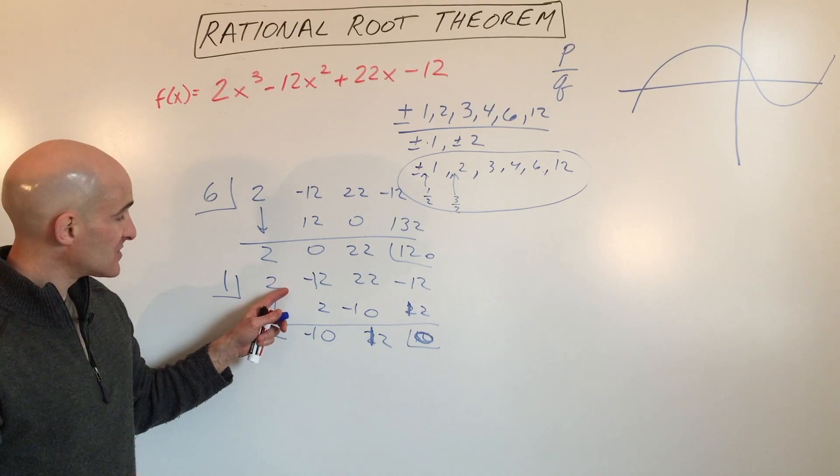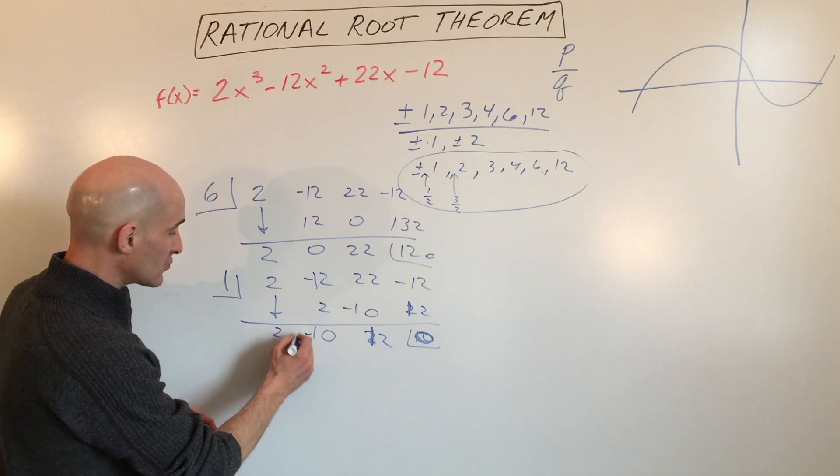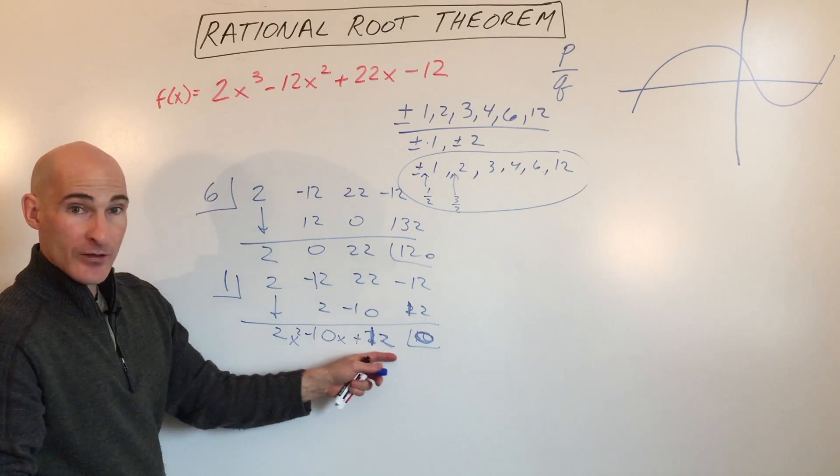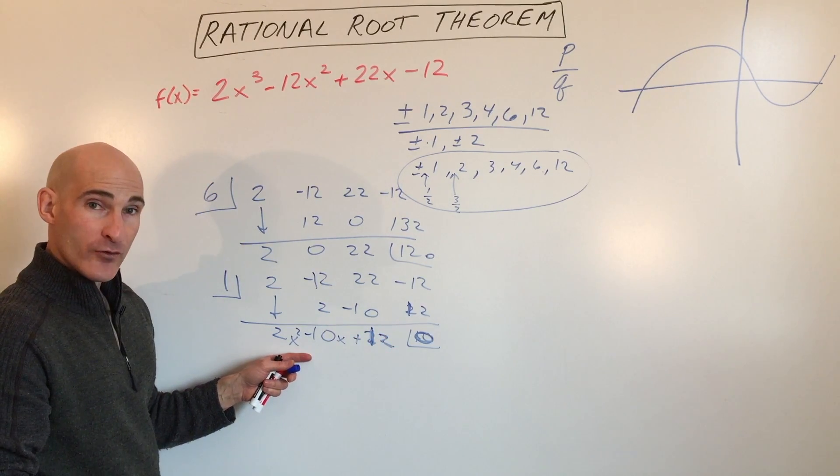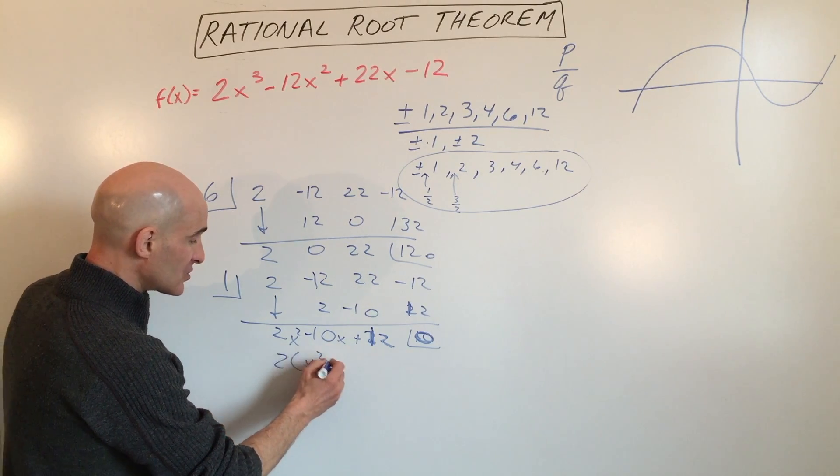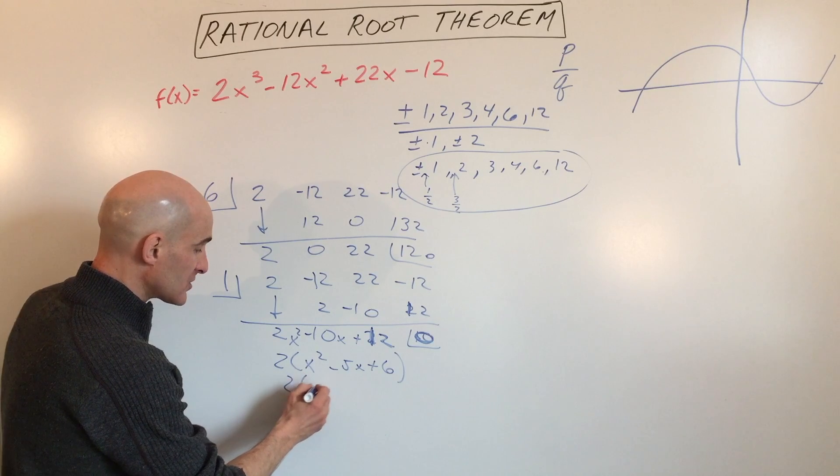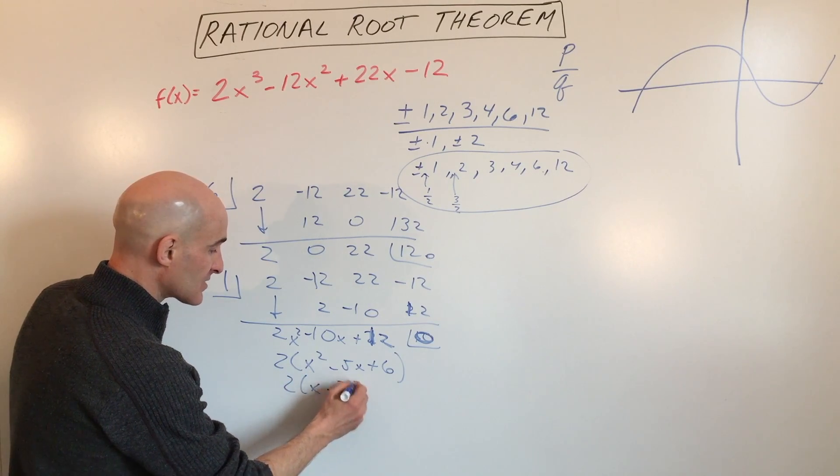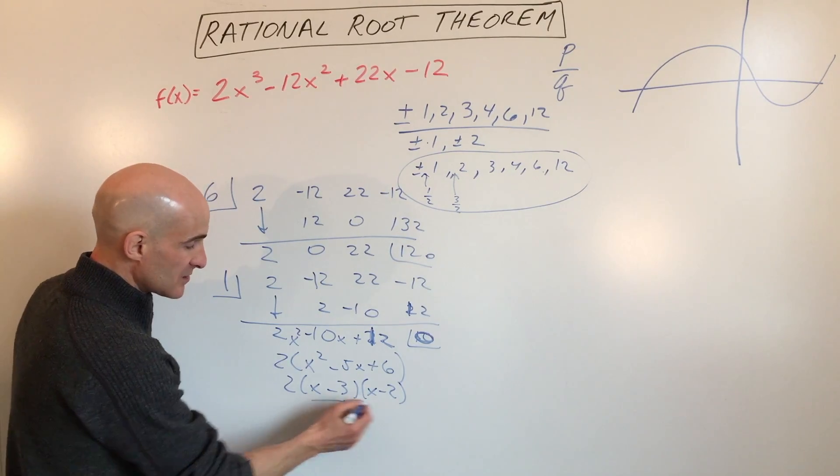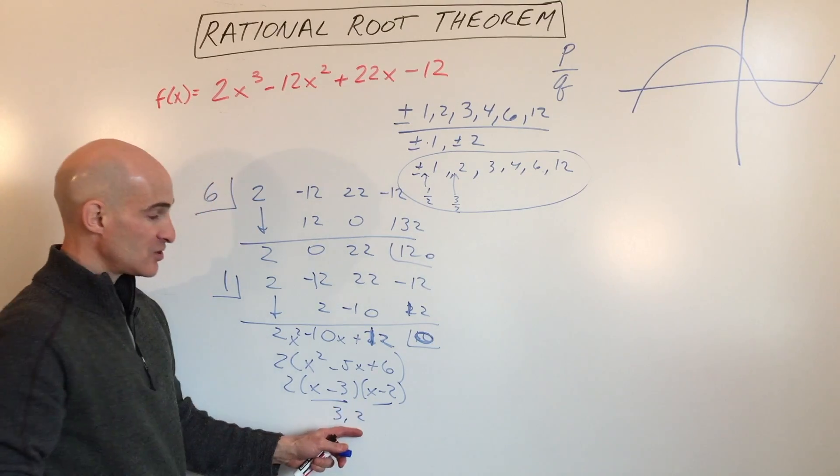What happens when you do the synthetic division is this goes down by 1 degree. Originally it was a cubic, now we're down to a quadratic: 2x² - 10x + 12. Now that it's in a quadratic, we can do the quadratic formula or factor. Here I'm going to factor out the 2, and factor this into two binomials: x minus 3 and x minus 2. If I set these factors equal to 0, we get 3 or 2.